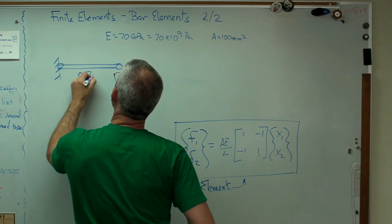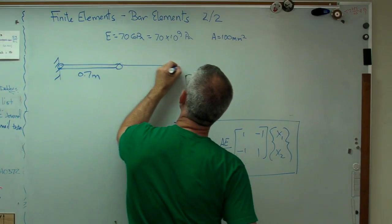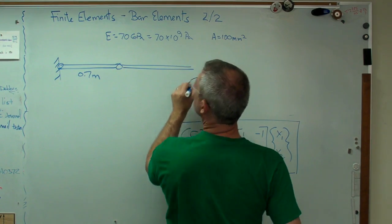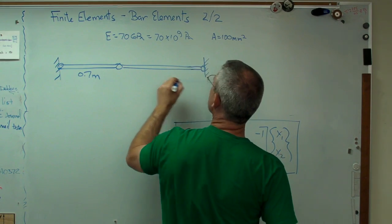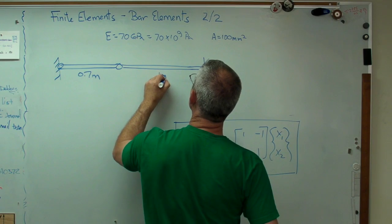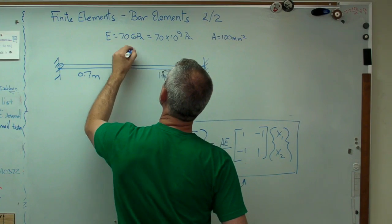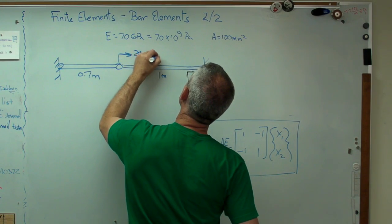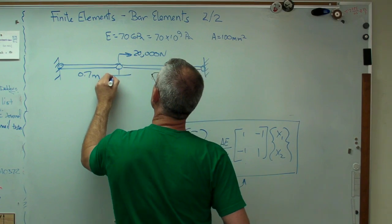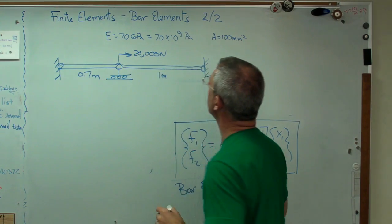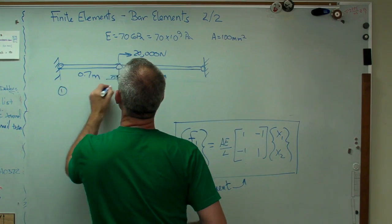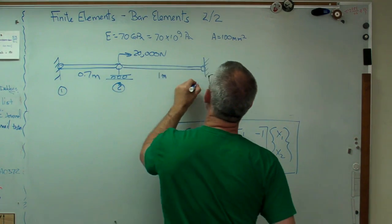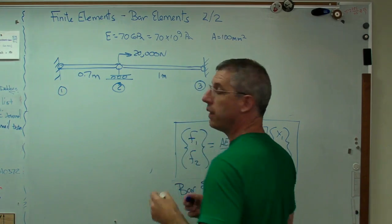And that was 0.7 meters. I'm going to make that look a little longer. That's one meter there. That was 20,000 newtons if I remember right. And I had my little support there to keep it horizontal. So that's my problem. I'm trying to find x2. That was grid point one, grid point two, grid point three.